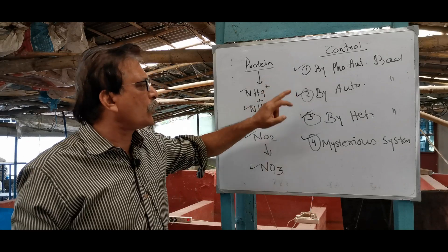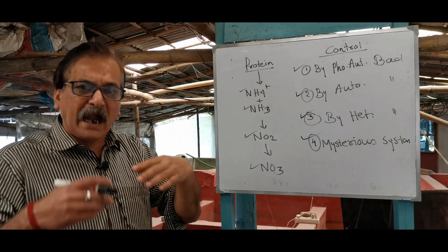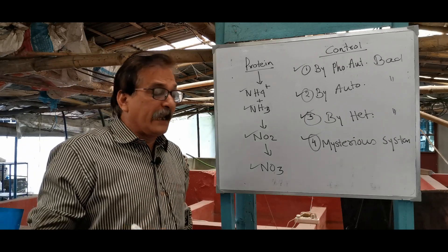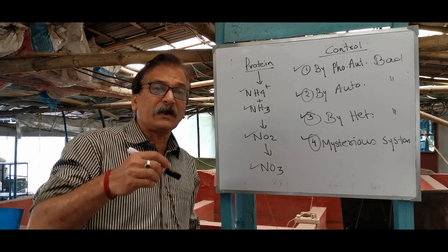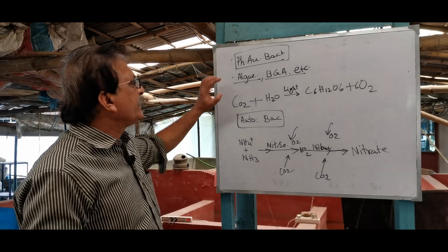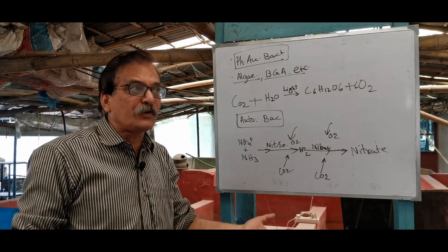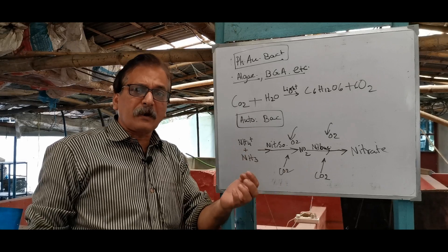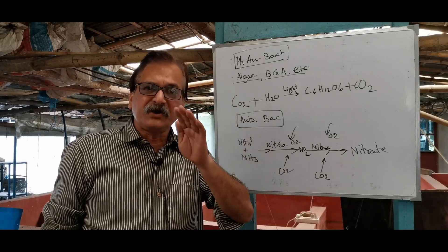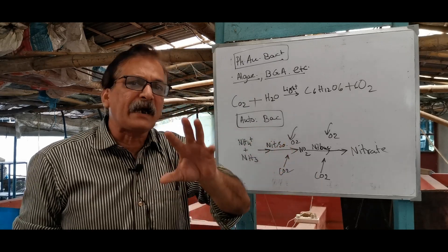The bacteria — like phototrophic, autotrophic, and heterotrophic — use carbon as a carbon source. The phototrophic bacteria use a carbon source. As we have to use the biofloc tank, the ammonia is reduced — it is a carbon source.